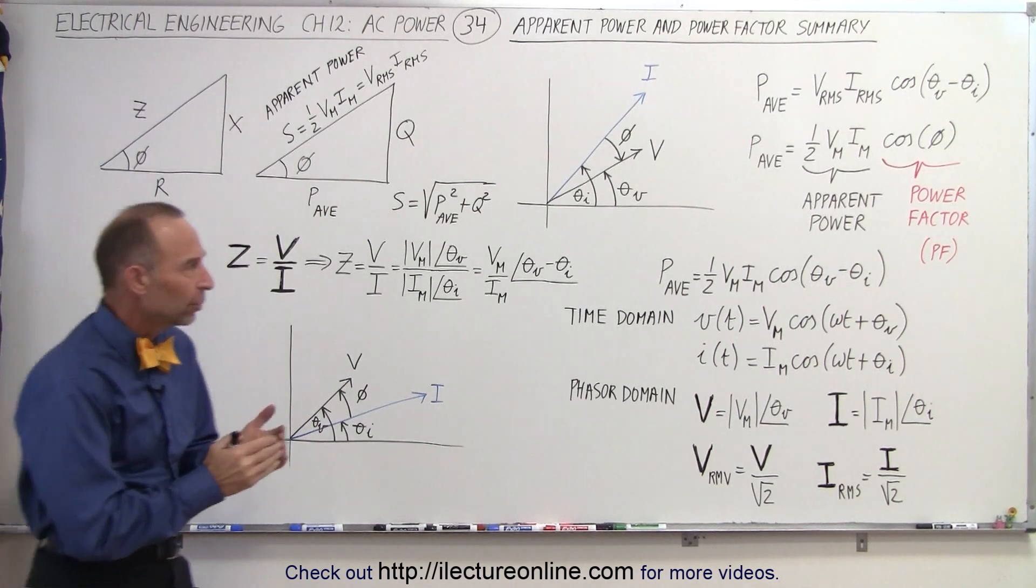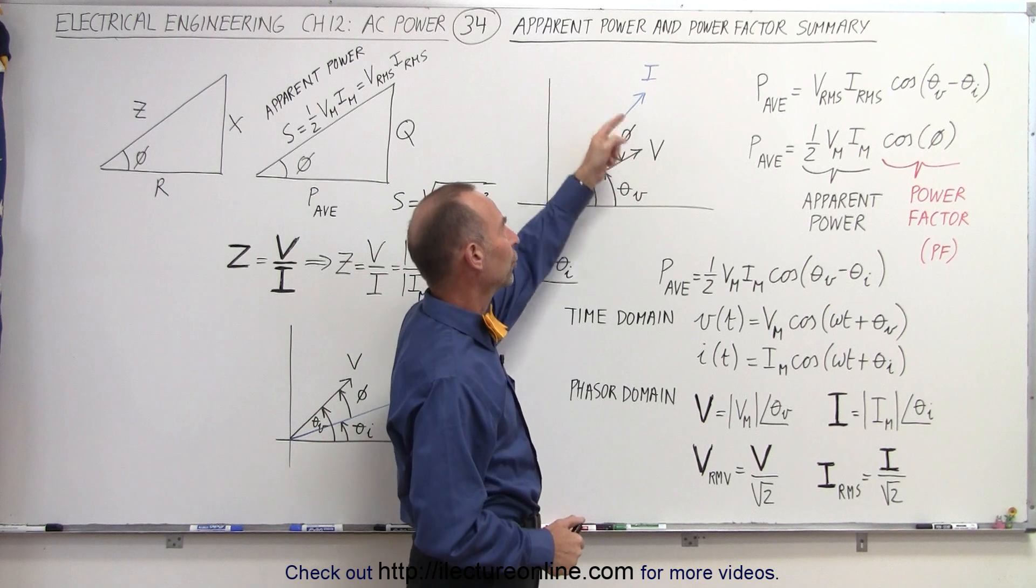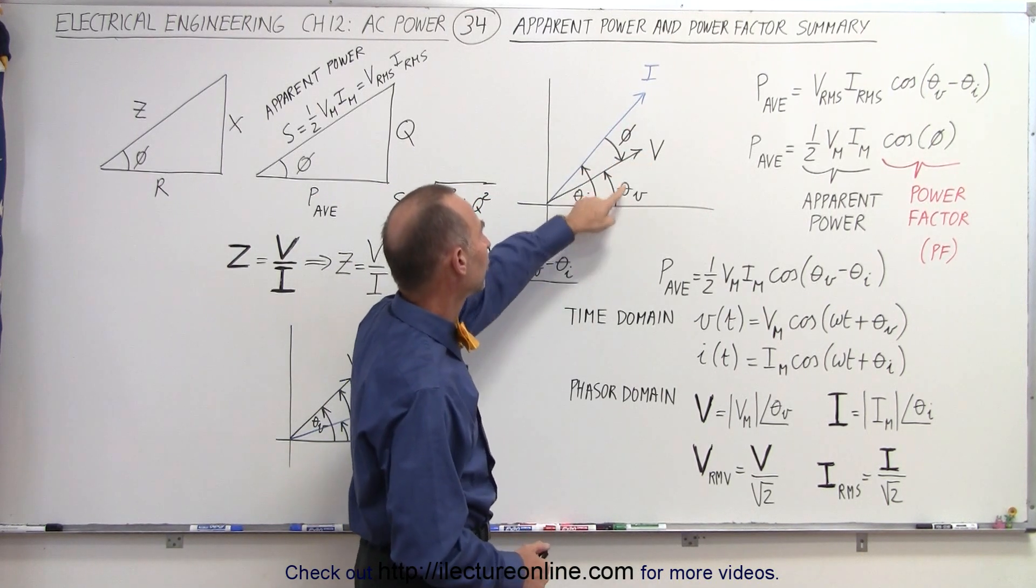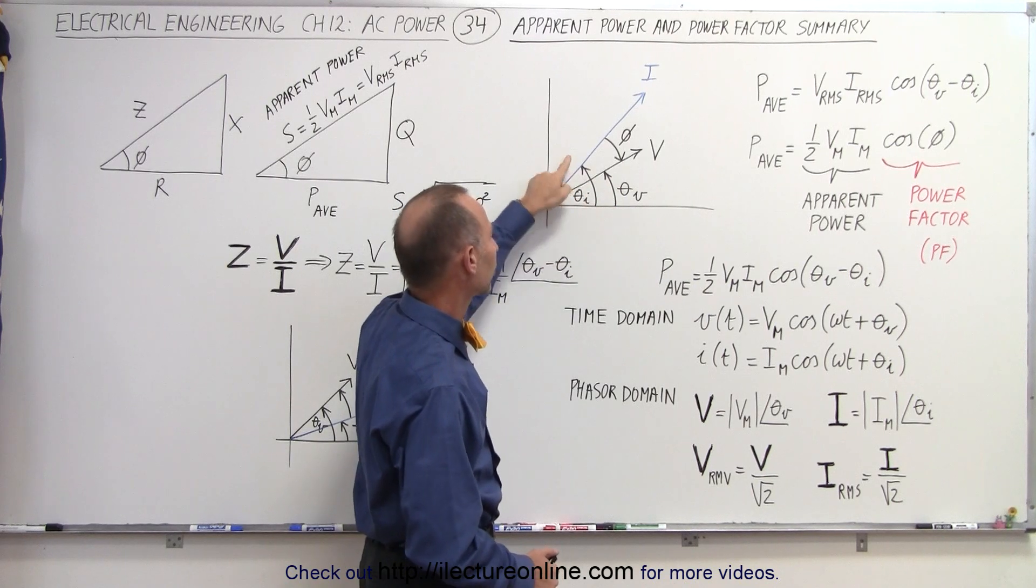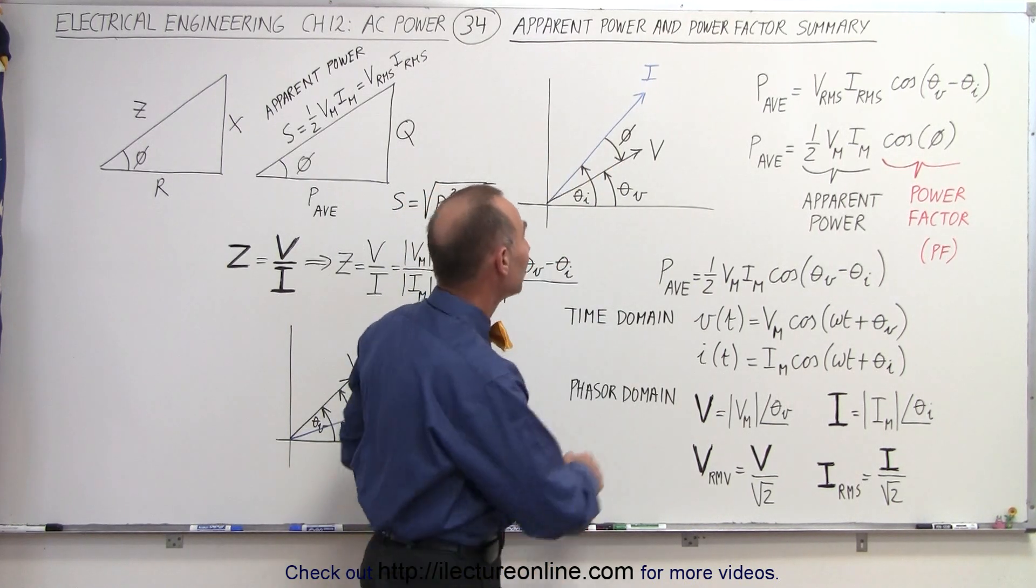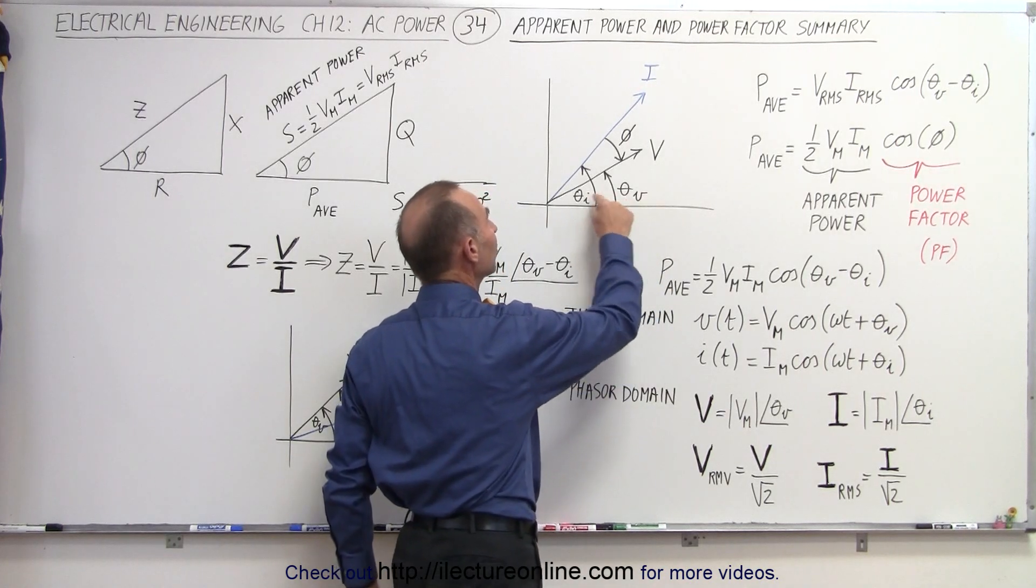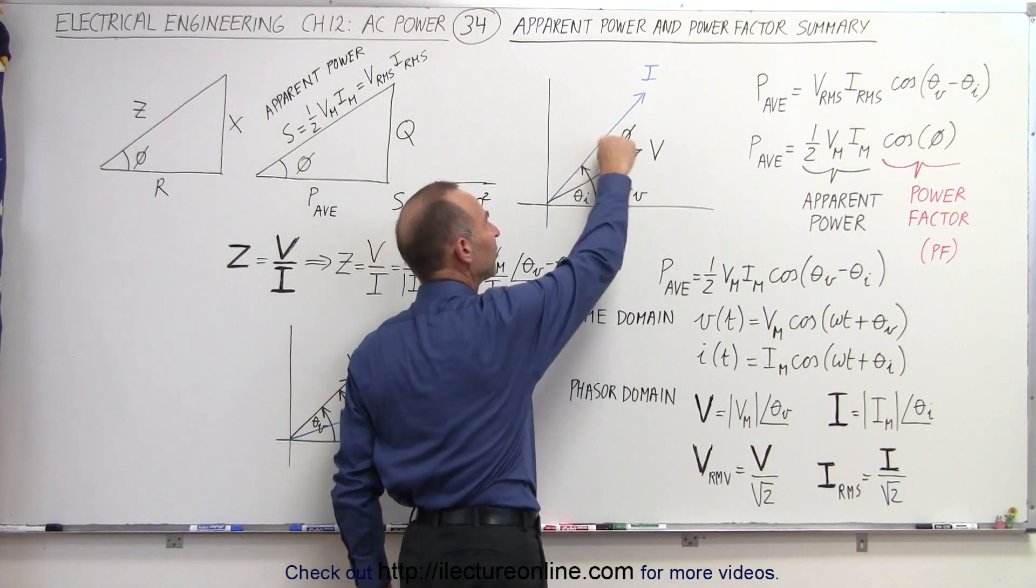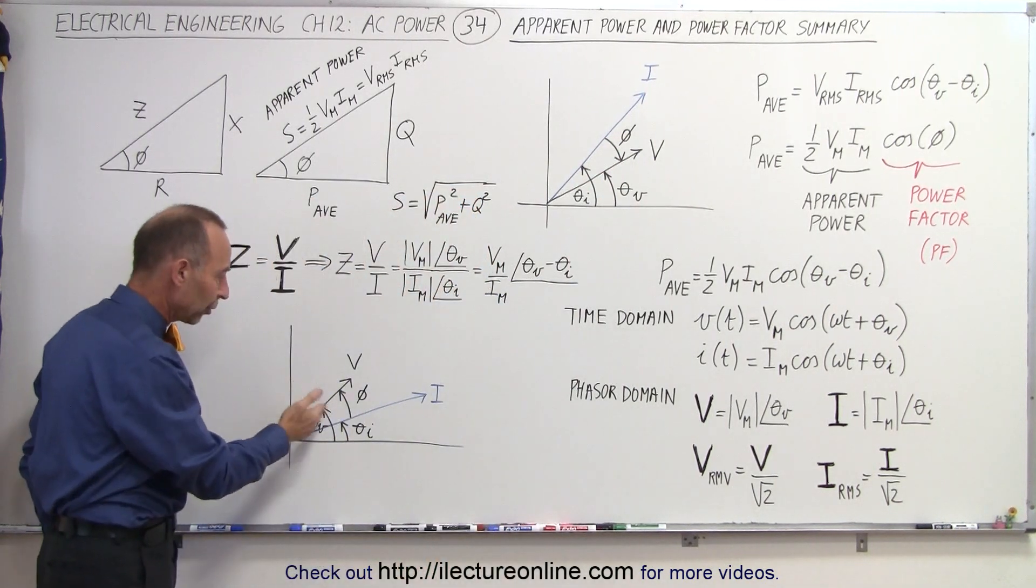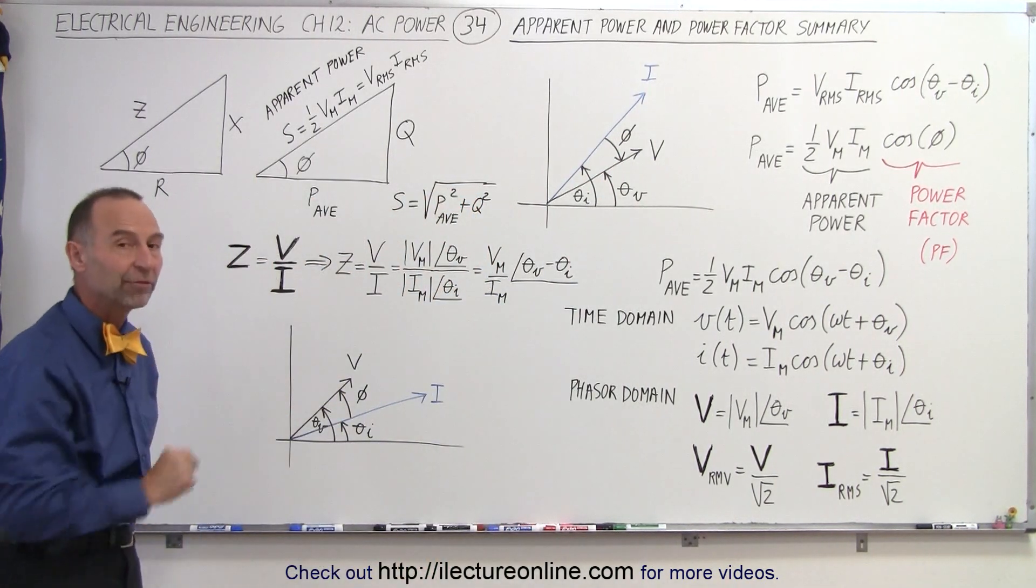So again, there's a relationship between the voltage and the current in phasor format. We can see that there's a phase angle relative to the voltage and a phase angle relative to the current, and that the phase angle between the two, phi, is the phase angle of the voltage minus the phase angle of the current. In this case, we'll have a negative phase angle, and if the voltage leads the current, then in this case we have a positive phase angle.